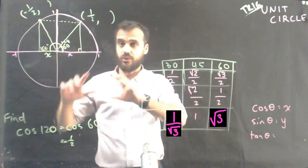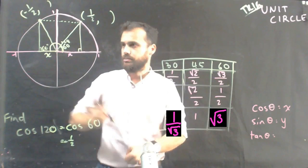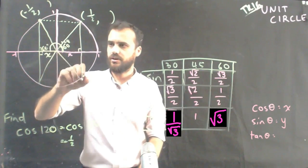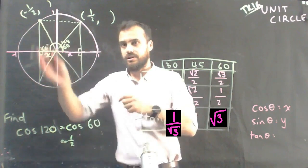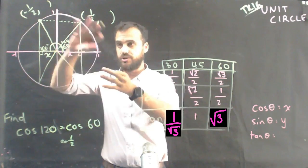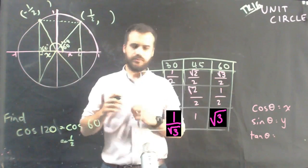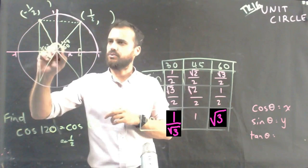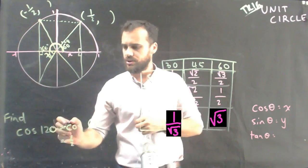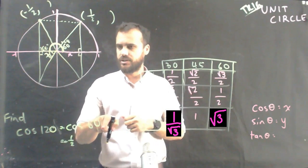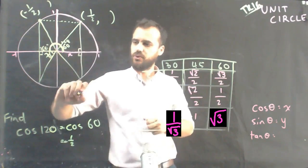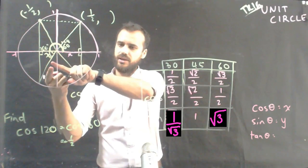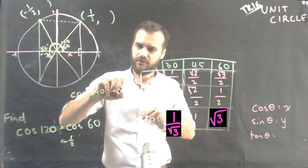We can actually use that symmetry all around the circle. We can move into the third quadrant down here. And we can move into the fourth quadrant down here. We've got symmetry all the way around this circle. So what that means is I can go all the way around to here. That's 180 plus 60. So cos 120 is equal to negative cos 60. Cos 240 is also equal to negative cos 60.